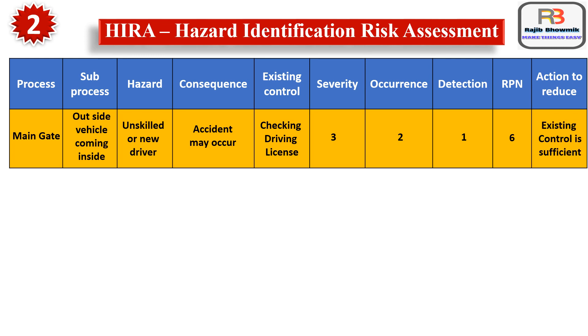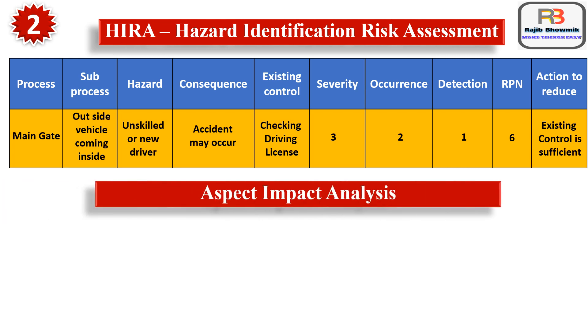The organization has to fix a cut-off mark. If RPN is below the cut-off mark, say 30, then no further action is needed and existing controls are sufficient. But if RPN is more than the cut-off mark, then the organization needs to take action — some task force or project — to reduce that hazard.